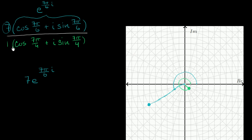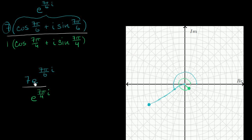The bottom complex number can be rewritten as one times — we don't really have to write the one — e to the seven pi over four i. This comes straight out of Euler's formula. When you write it in this way, we can just use exponent properties to simplify it. We have the same base, so we can just subtract this exponent from that exponent.